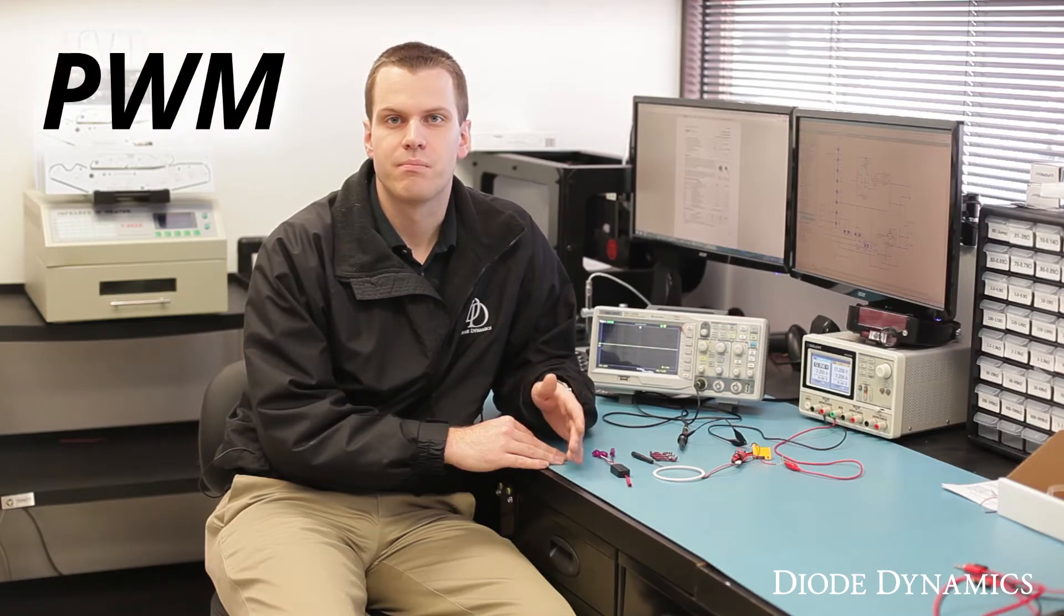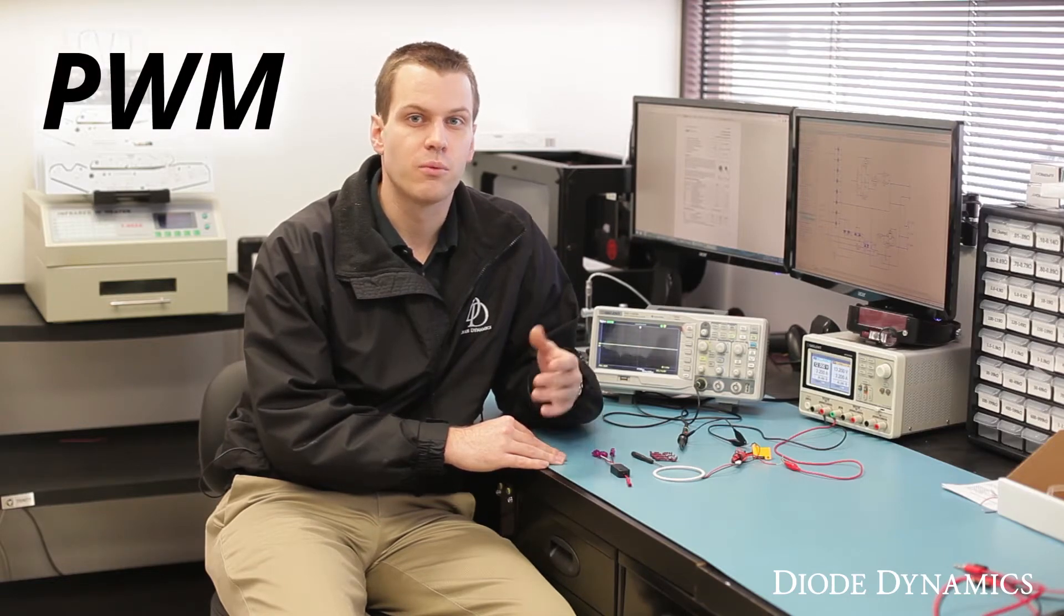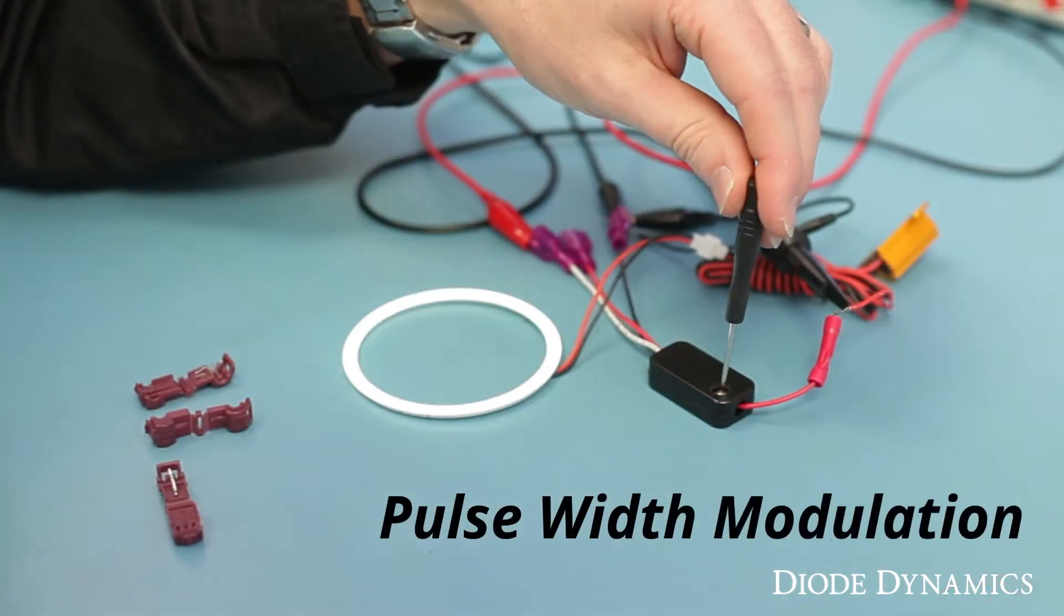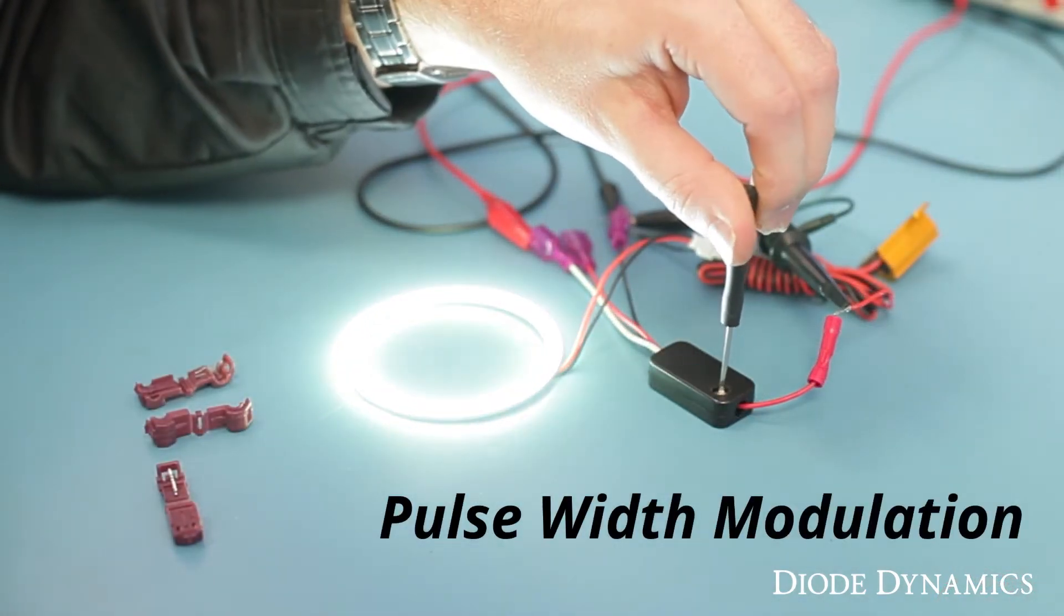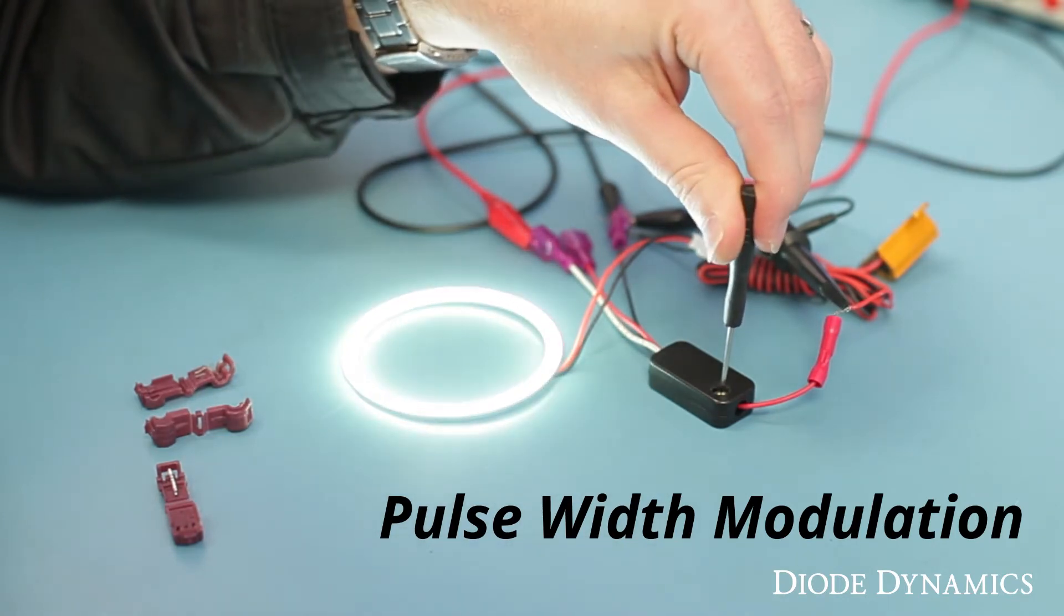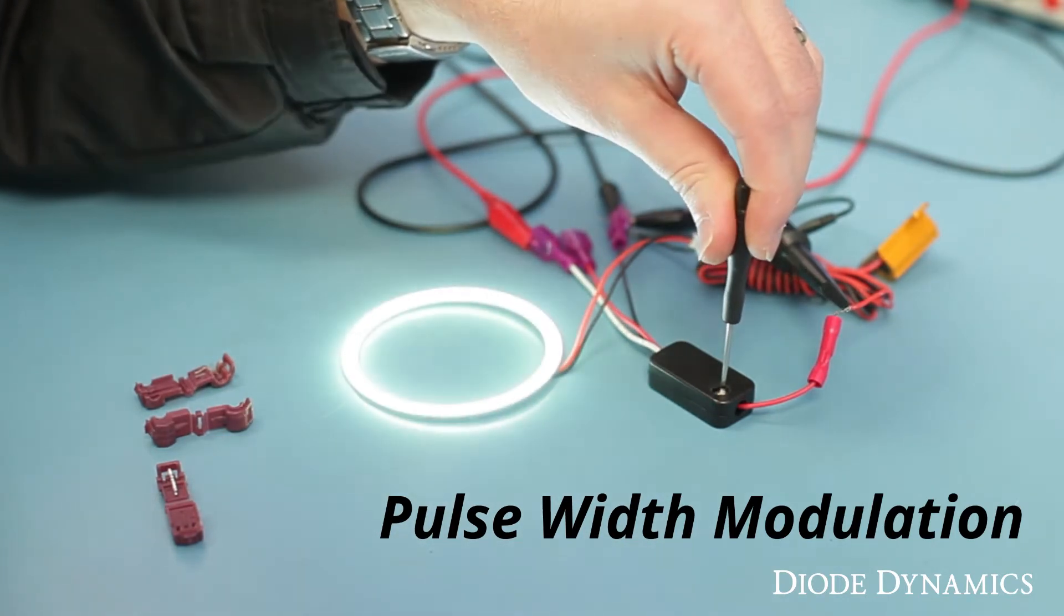The best way of dimming LEDs is by using PWM. You might have heard this before, but what is it? PWM stands for Pulse Width Modulation. Basically, the LED is turned on and off so quickly that your eye can't even see the flickering. Instead, you just see the average level of brightness.